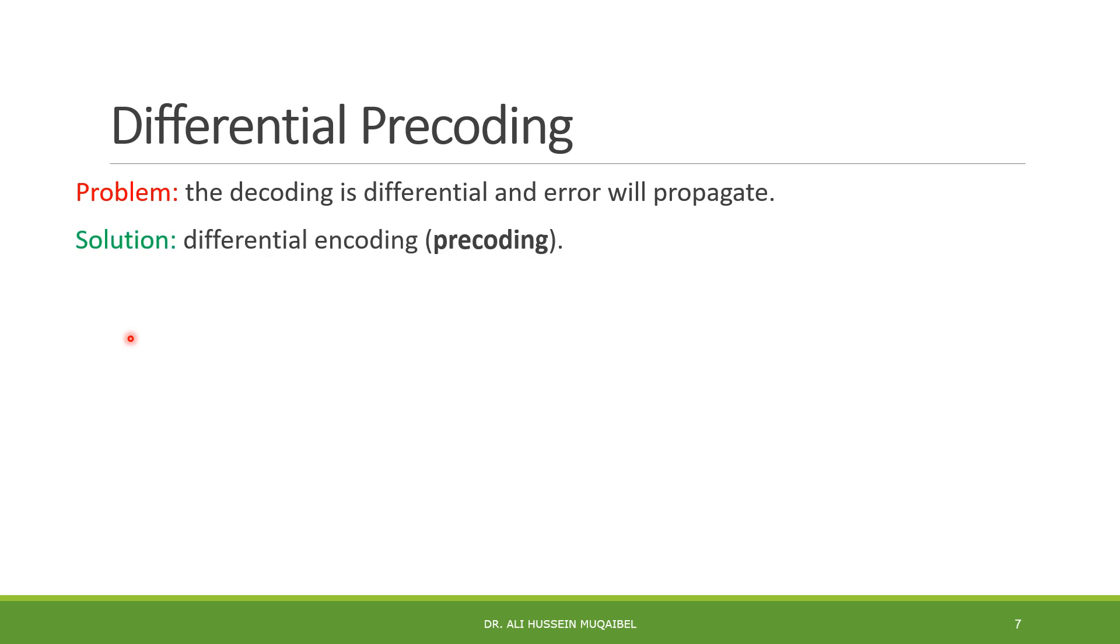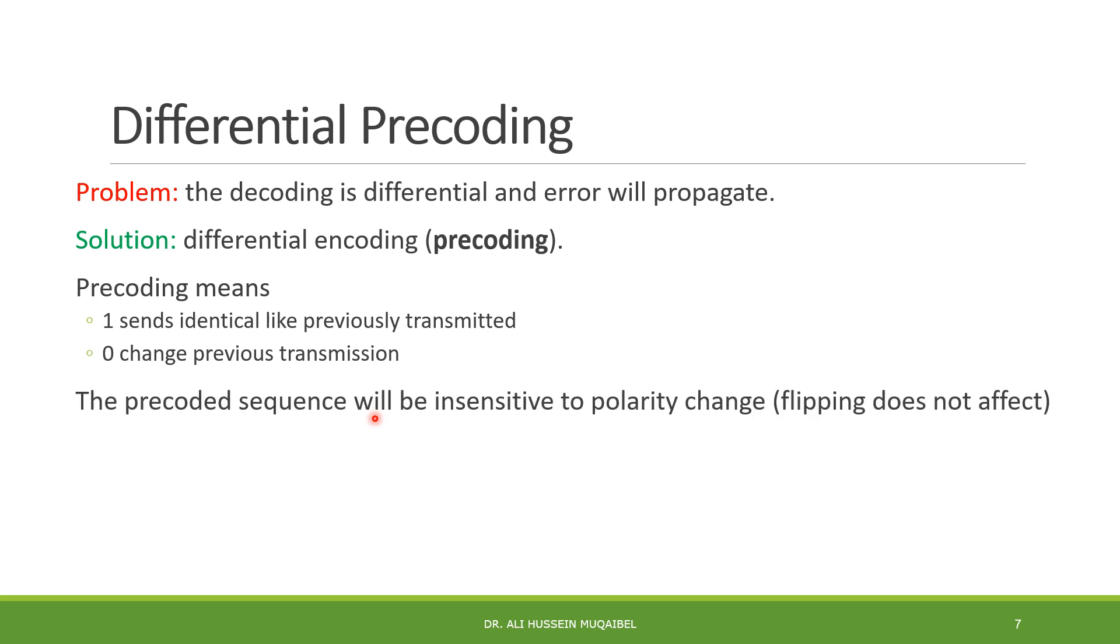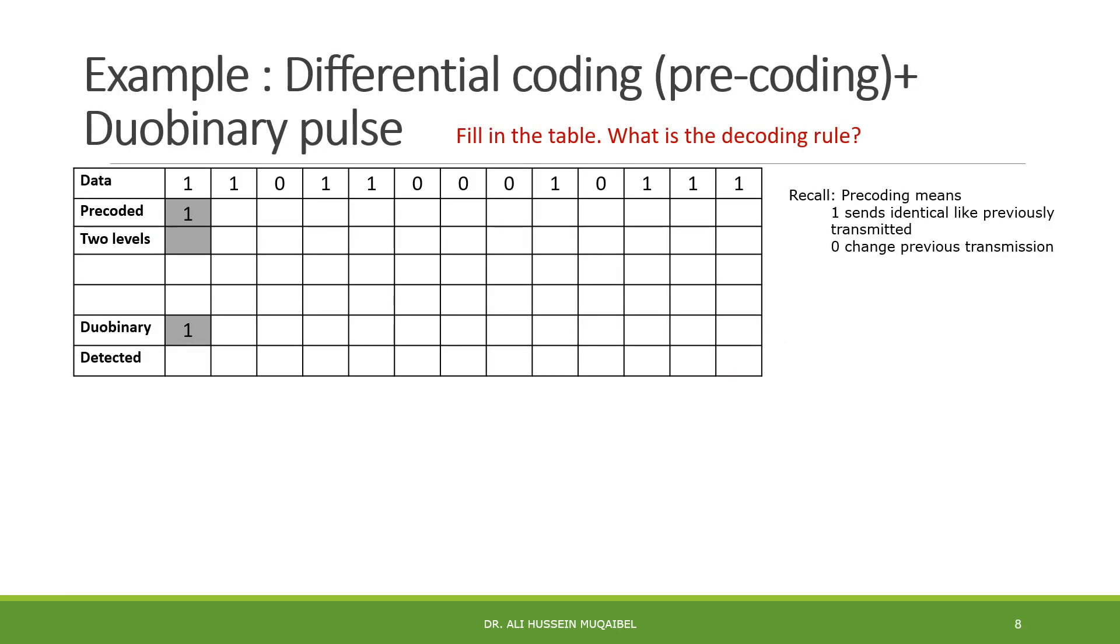What's the solution? The solution is called differential pre-coding. Pre-coding, because it's done before transmission. So, it's called pre-coding before going to the duobinary. What does pre-coding mean? It means, if I have one data, I will send identical previously transmitted bits. If I have zero, I'm going to introduce a change. Pre-coding, the pre-coded sequence will be, the results will be insensitive to polarity change. This is the same sequence we had before, but I added one row. This row is the pre-coding row. According to pre-coding row, one sends identical like previous transmission, zero change.